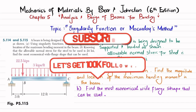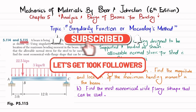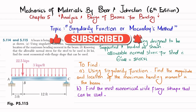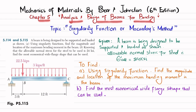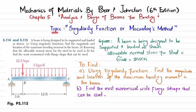Welcome back. Problem 5.115 is taken from Chapter 5, Analysis and Design of Beam for Bending, from the book Mechanics of Materials by Beer & Johnston, 6th edition. The topic we are covering is singularity functions, also known as McCauley's method. The statement: a beam is being designed to be supported and loaded as shown. Using singularity functions, find the magnitude and location of maximum bending moment in the beam.